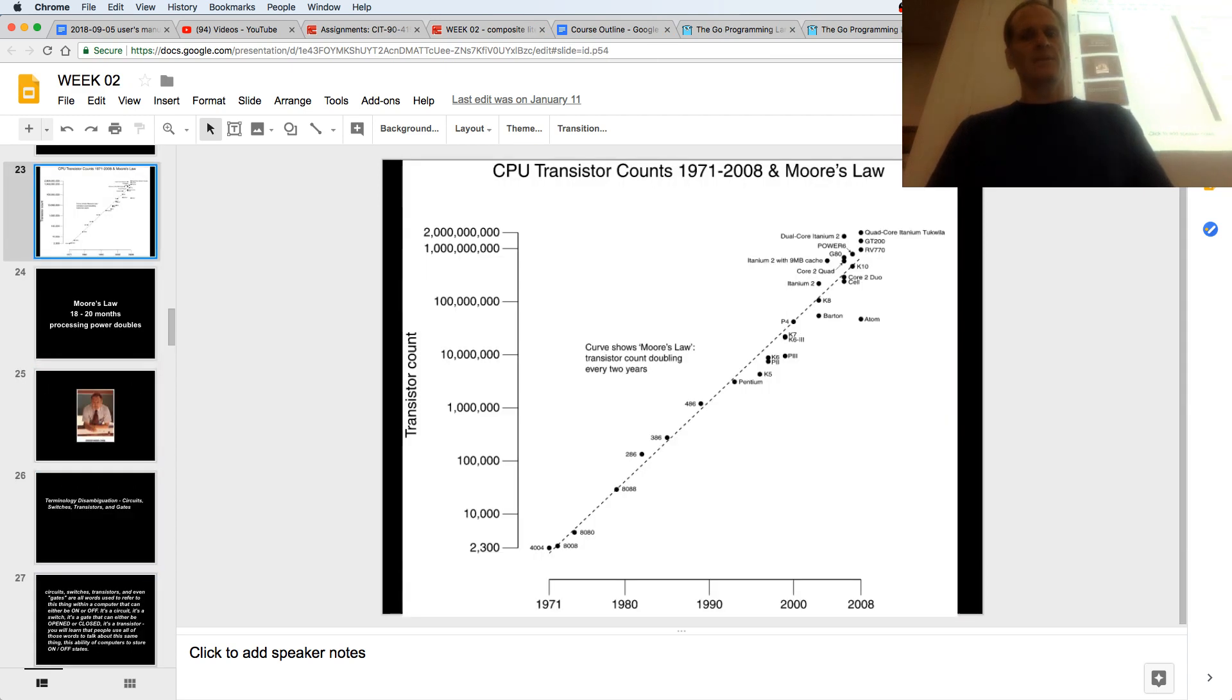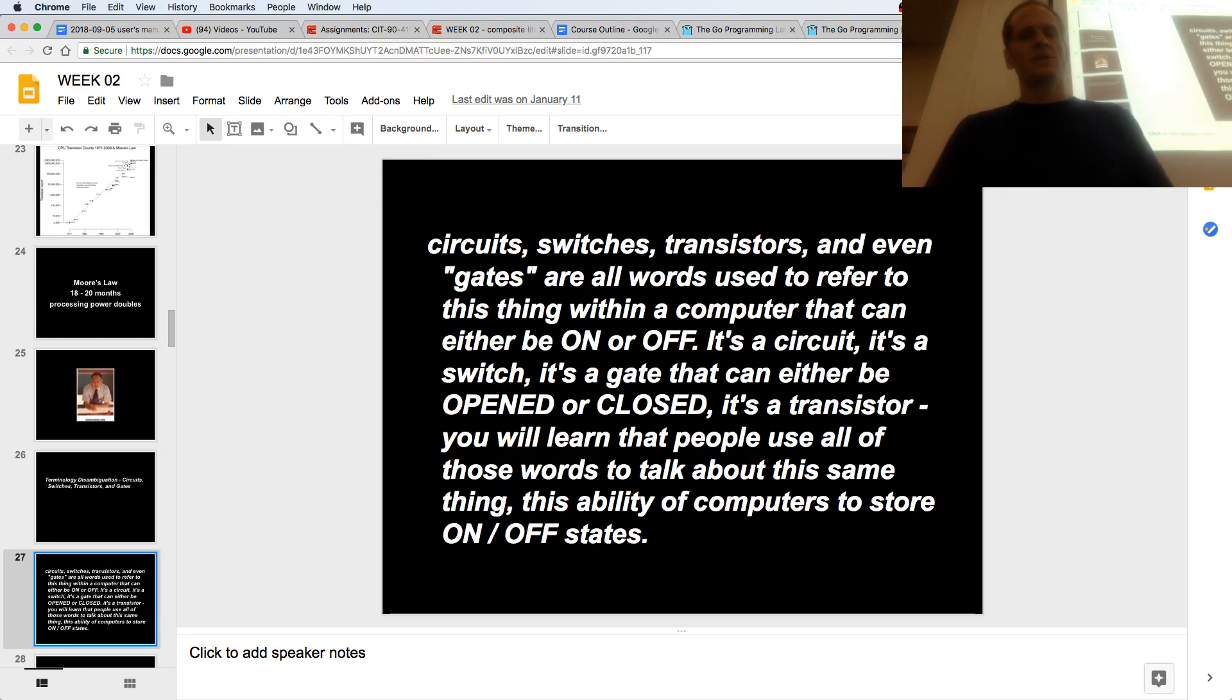This is good to read, so I'll put it in here. Circuit, switches, transistors, and even gates are all words referred to this thing within a computer that can be either on or off. It's a circuit, it's a switch, it's a gate, it can either be opened or closed, it's a transistor, right? You'll learn that people use all these words to talk about the same thing. The ability of computers to store on-off states and then check them, and then people just create coding schemes.